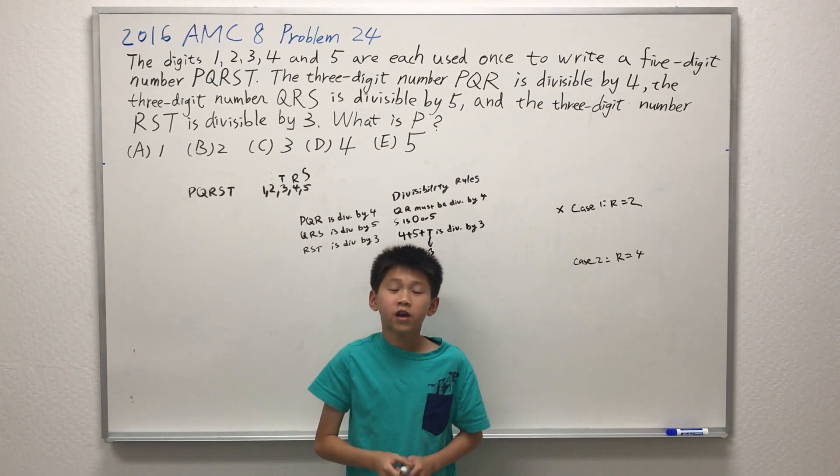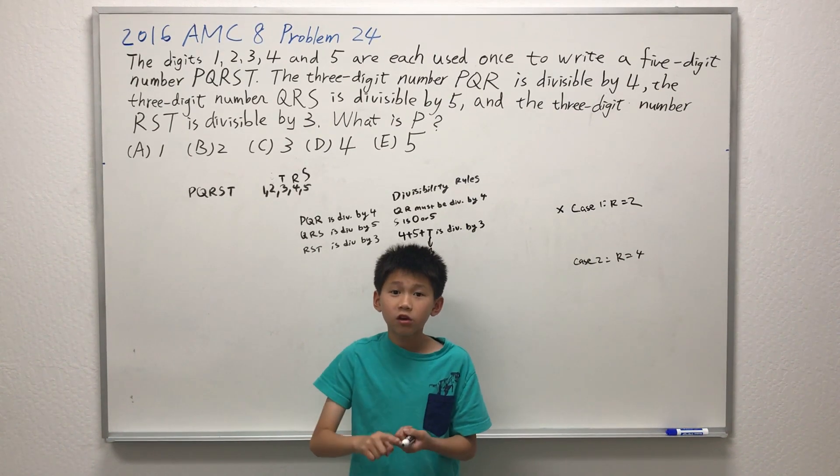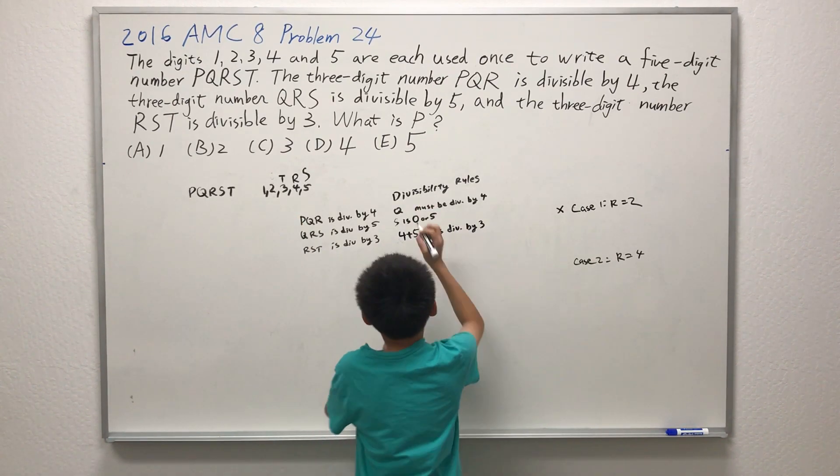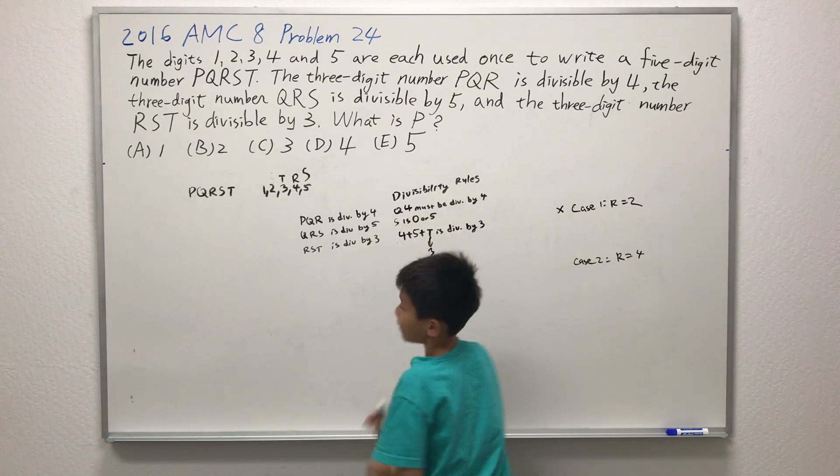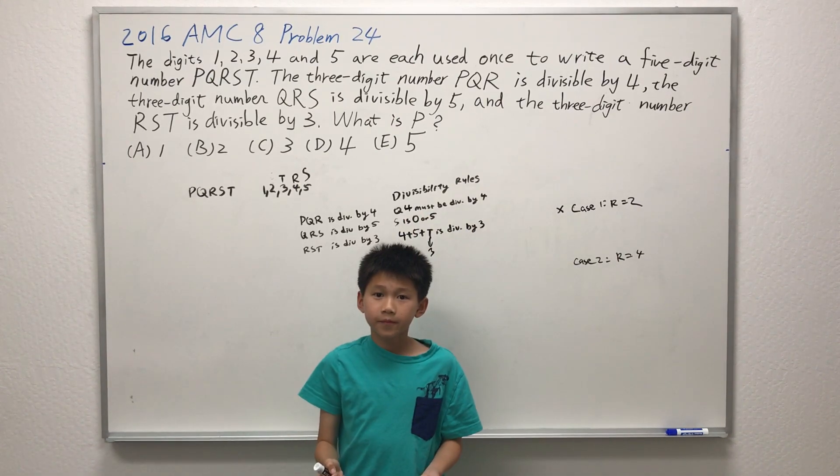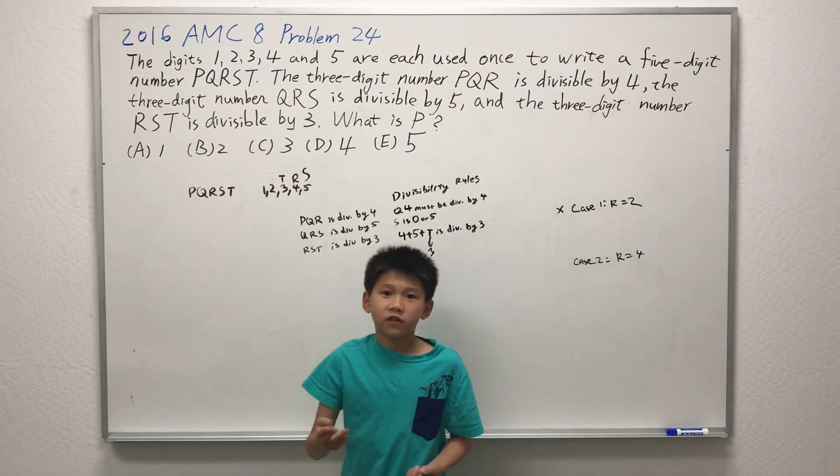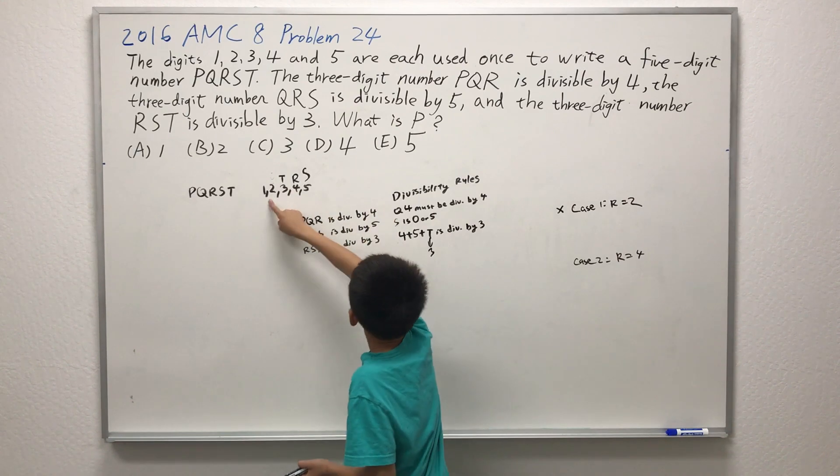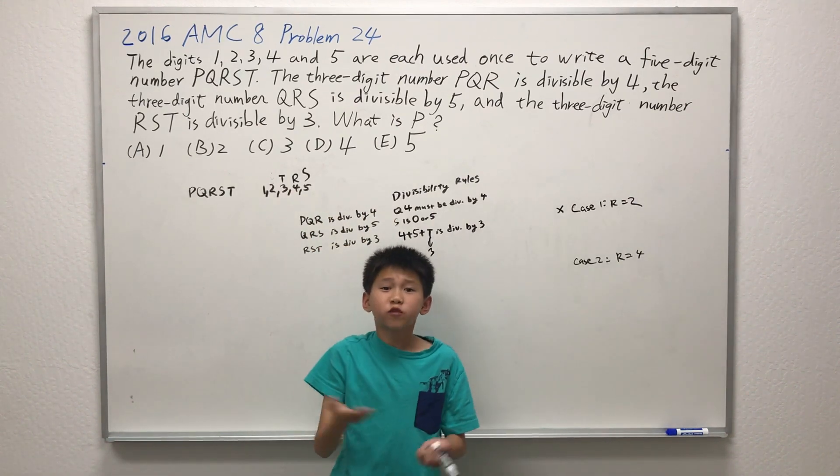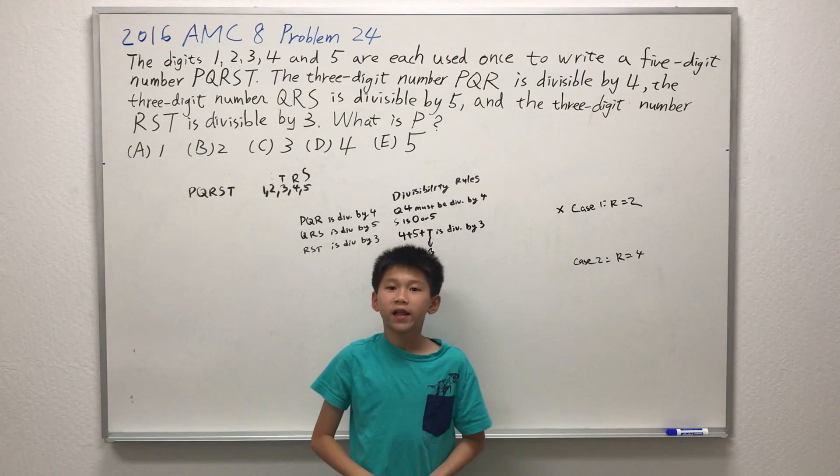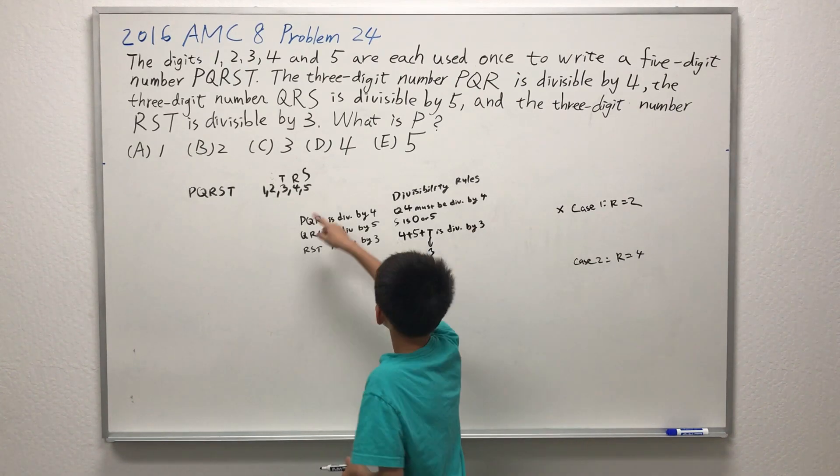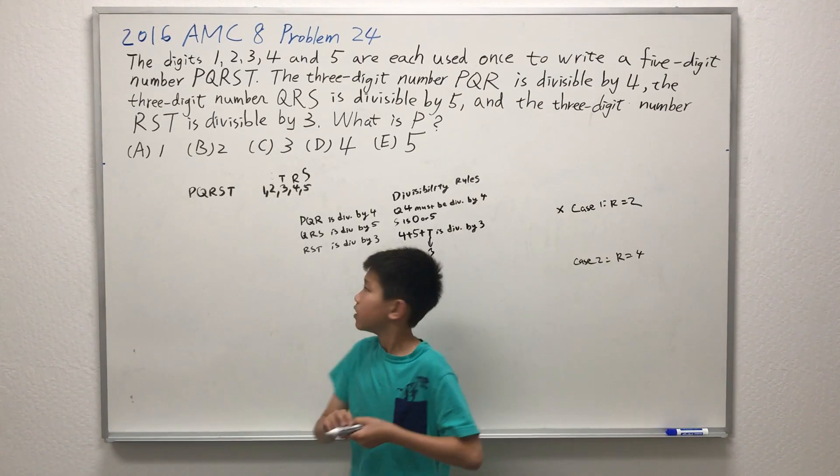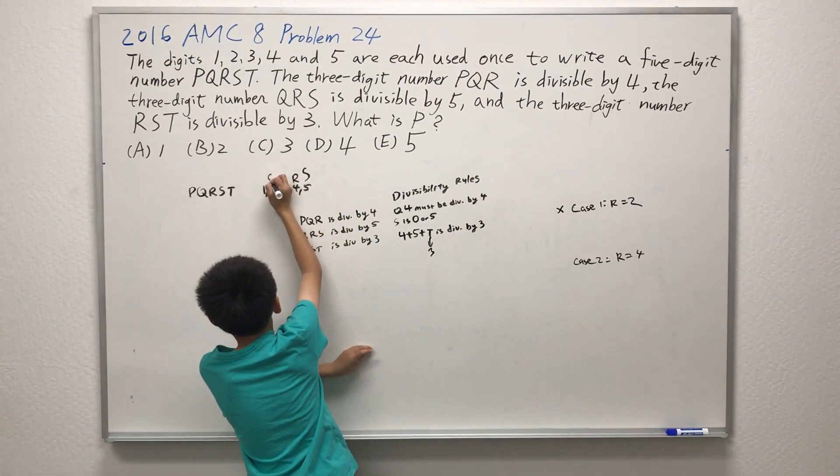Now we only have two more variables to go, P and Q. And they can be the values 1 or 2. Since now we have the value of R, then Q4 must be divisible by 4. There are only two cases to check for Q. So let's start. Q is 1. 14. Is 14 divisible by 4? No! So that is an invalid case. Let's check where Q is 2. Is 24 divisible by 4? Yes! So that means Q is equal to 2.